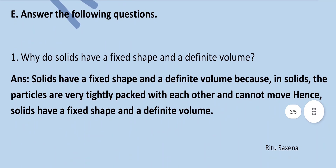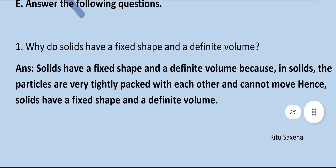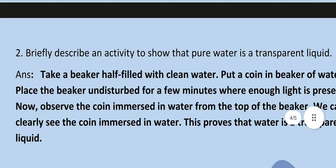Longer answer: Why do solids have a fixed shape and a definite volume? Solids have a fixed shape and a definite volume because in solids the particles are very tightly packed with each other and cannot move. Hence solids have a fixed shape and a definite volume. Describe an activity to show that pure water is a transparent liquid.